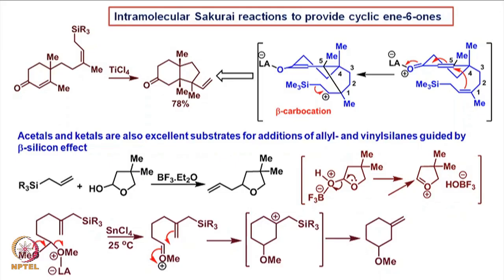Now we can look at the intramolecular Sakurai reaction to provide a cyclic enone of this kind. When a substrate with a cyclic conjugated enone and an allylsilane moiety is treated with titanium tetrachloride as Lewis acid, a bicyclic ketone is formed, which is an en-6-one.